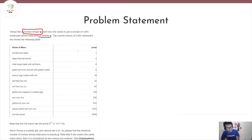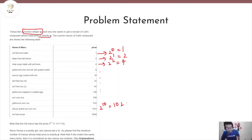Eel flavoured water is of price 1, deep fried eel bones of price 2, and so on. When we look at this table, one thing needs to instantly jump into our brain: 2 power 0 is 1, 2 power 1 is 2, 2 power 2 is 4, and so on until 2 power 10 is 1024 and 2 power 11 is 2048. So the maximum item price is 2048 and the minimum item price is 2 power 0, which is 1. That is why it's given that the i-th menu has the price 2 power i minus 1.